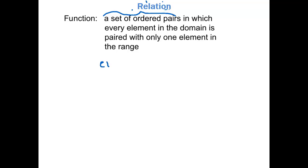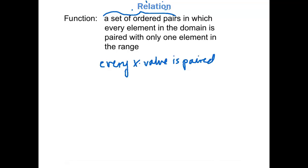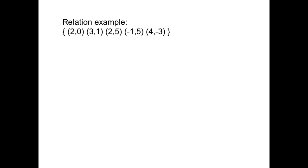So every x-value is paired with only one y-value. Let's think about the example that we just looked at.